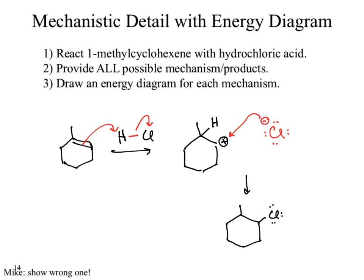What we've gone through and done is drawn the wrong product. This is the incorrect mechanism. It is better to have the hydrogen go to the other position. Because if the hydrogen went to the other position, I would form a more substituted carbocation. The chloride could then come in and share there.